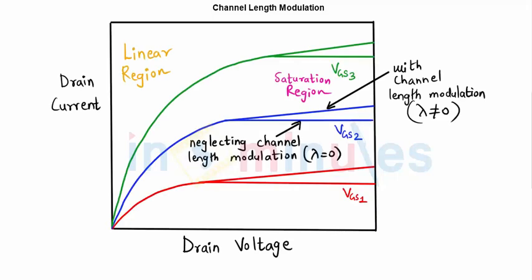When λ = 0 or channel length modulation is neglected, the current remains constant in saturation. With channel length modulation, the current increases with VDS, as shown in the graph. This is the effect of channel length modulation. Stay tuned for further clips — thank you very much.